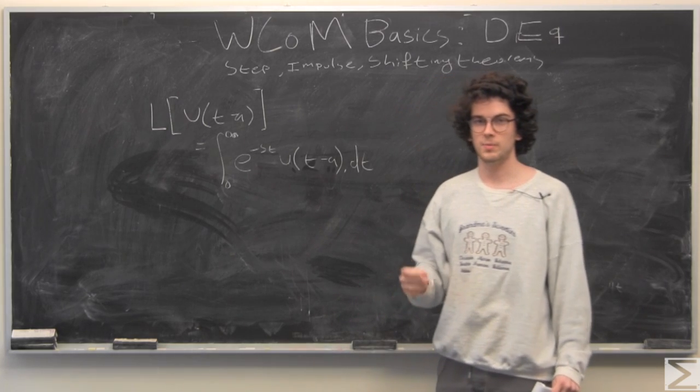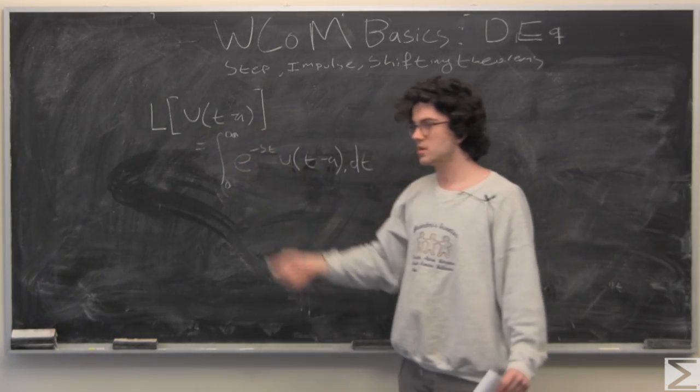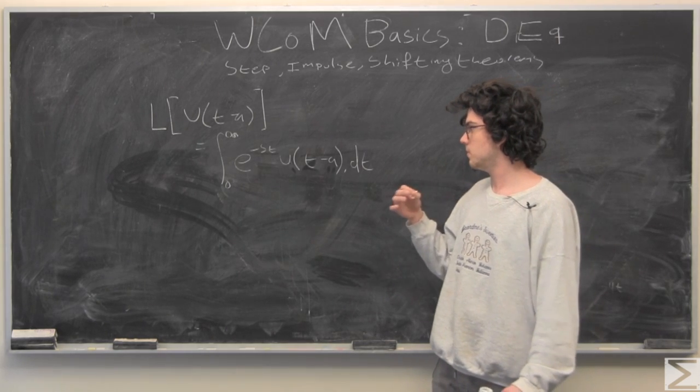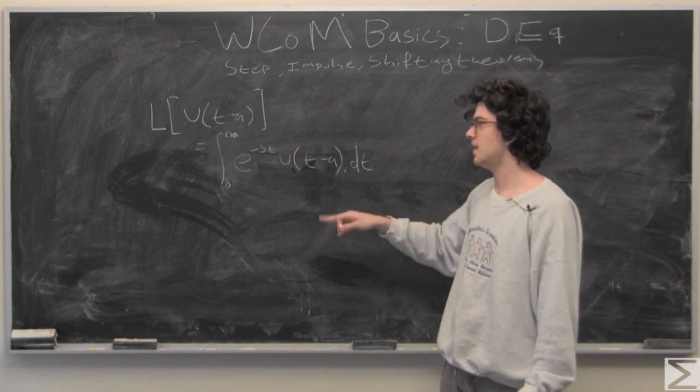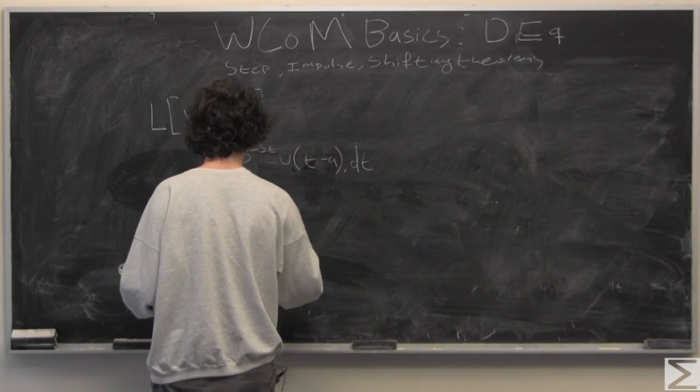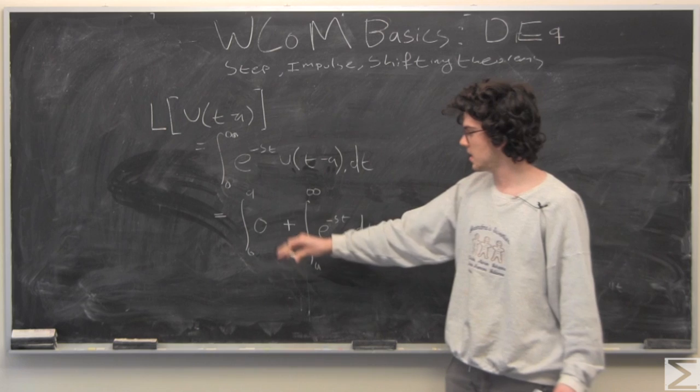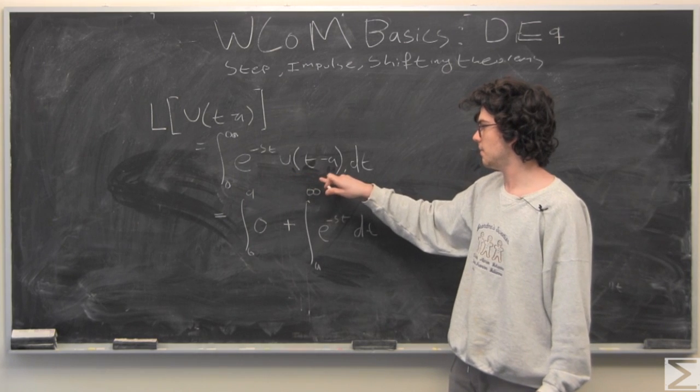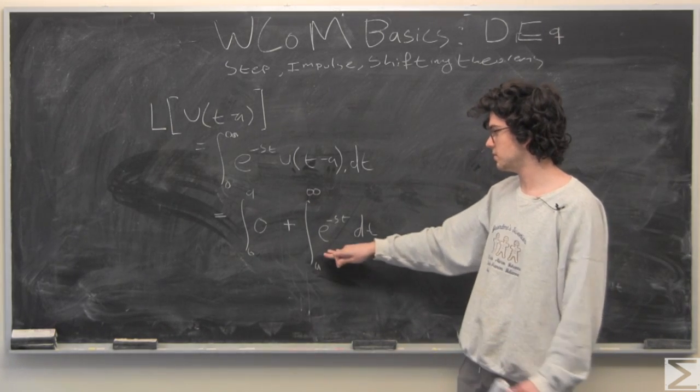So, I've just set up our Laplace transform in an integral form. We have our function here. That's our function. It's the step function. But we can't just integrate this straightaway, but we do know that this is 0 up until a, and then at a, it's 1, just because I've set k = 1 for now. So, all we have to do is evaluate this.